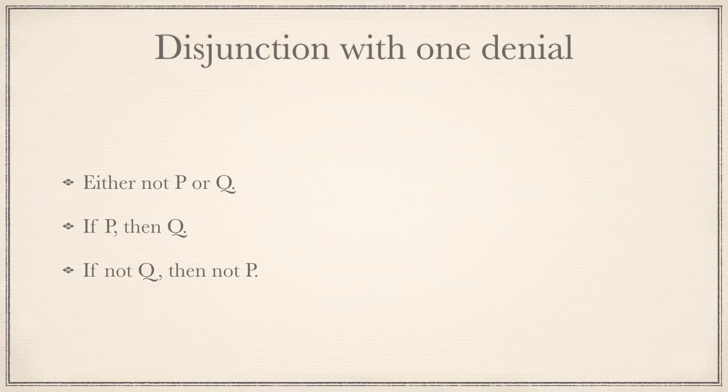Thus far, we have only encountered disjunctions where either both are asserted or both are denied. We have yet to see how a disjunction might be equivalent to some of the propositions where one of the disjuncts is false.